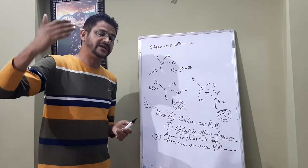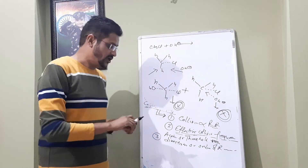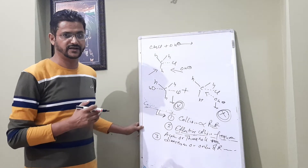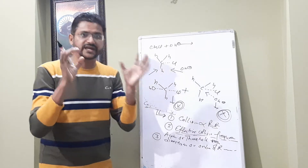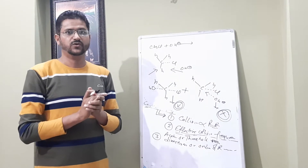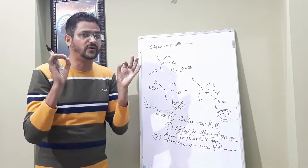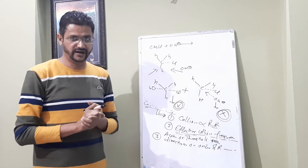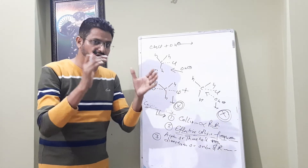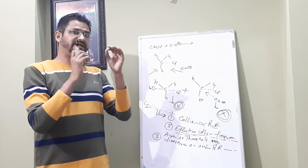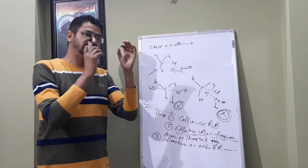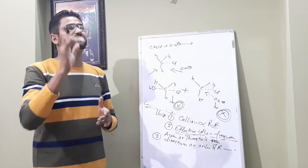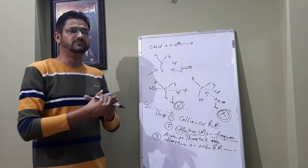So direction is also important. When reactant molecules interact in the correct direction, they finally convert into the product. Three things are important according to modern collision theory: first, collision — if the number of collisions increases, rate of reaction increases, and that is how pressure affects rate of reaction. Second, effective collision frequency — collision between reactant molecules with at least threshold energy. Third, proper direction or orientation.